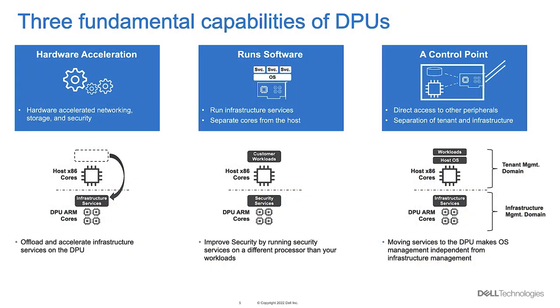The DPU is essentially a computer on the board. Instead of running segmentation and reassembly in the kernel and issuing non-maskable interrupts to the CPU — forcing it to stop whatever it's doing to pull data off the NIC — you offload that work. At 100 Gbps and 400 Gbps you simply can't keep masking those interrupts to move data. We're also seeing the ability to run software on the DPU cores, such as a firewall or load balancer.